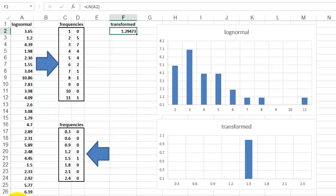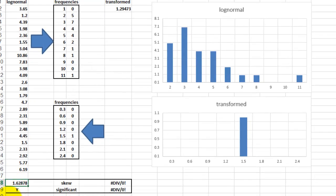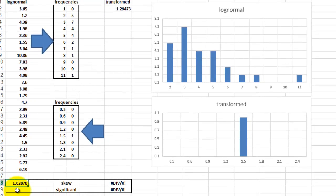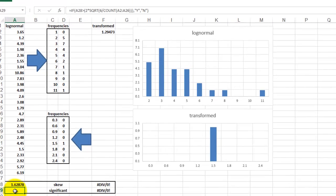So the skew factor is 1.63, which is significant if we use the formula that if the skew factor is greater than 2 times the square root of 6 divided by the number of cases, we consider that significant. So can we transform these figures? Sure.